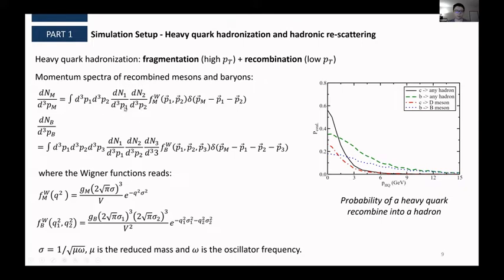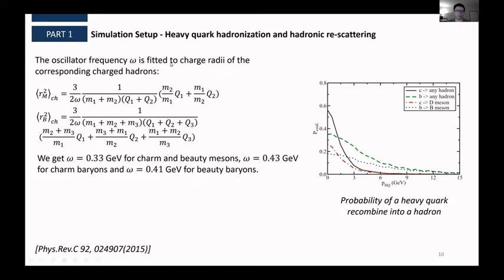So for the fragmentation part, we're using the Lund fragmentation, which dominates at high pT. And for the low momentum part, we are using the instantaneous recombination model. And the momentum spectrum of those recombined mesons and baryons are dependent on the constituent quark momentum distributions and the Wigner function. And the momentum distribution for light quarks are extracted from thermal distribution. And the momentum for the heavy quarks are drawn from the results after the Langevin equation evolution. And the Wigner functions are dependent on this sigma parameter, which is again dependent on the reduced mass and this oscillator frequency omega, because we assume that the wave functions are in a Gaussian shape. And we get this oscillator frequency omega by fitting to charge radii of the corresponding charged hadrons.